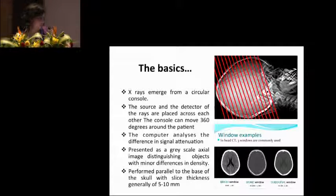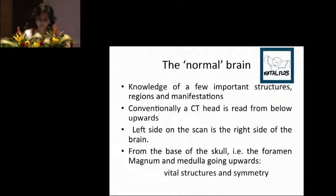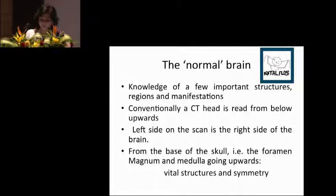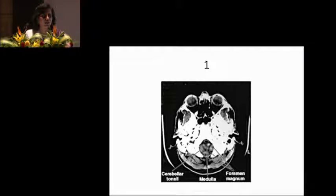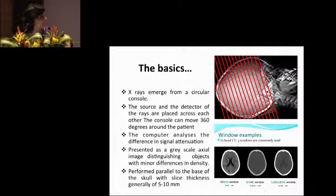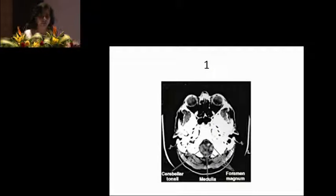We also have windows. If your radiologist wants to look at the brain properly, he'll call for the brain window, the bone window, or the subdural window. In a CT scan, we go from down upwards, so left is right and right is left. If we know what the normal structures are on our path, reading becomes so much easier. There are eight levels we should be able to recognize in a normal brain scan, and it always starts from below, with cuts going from the base of the brain upwards.